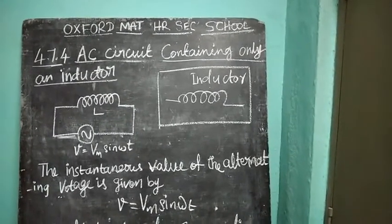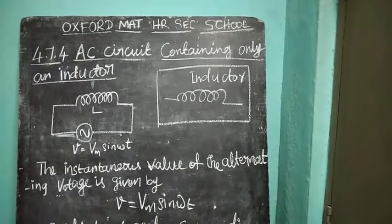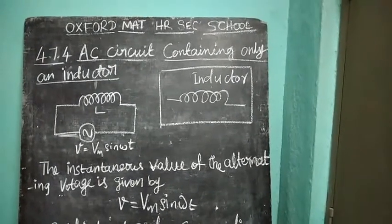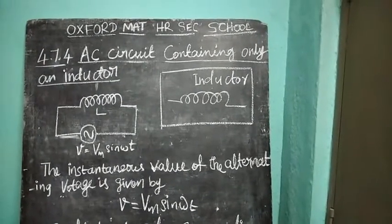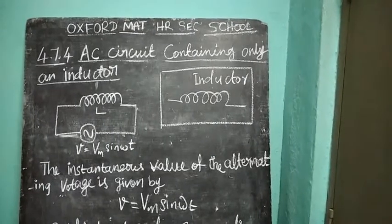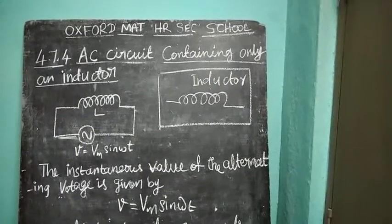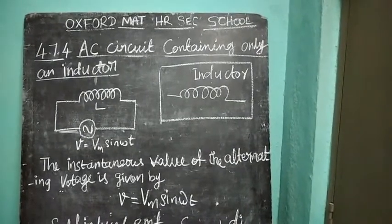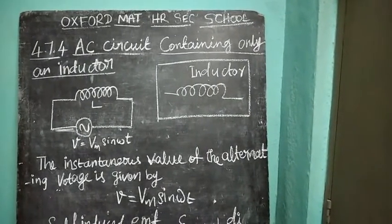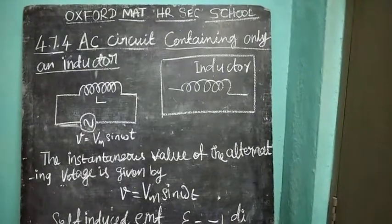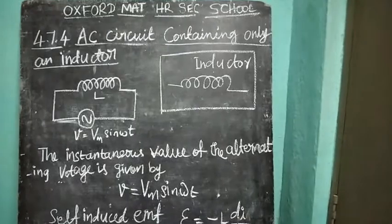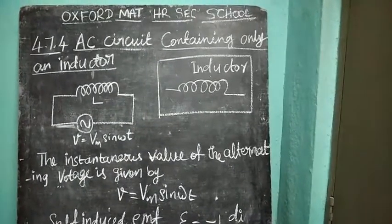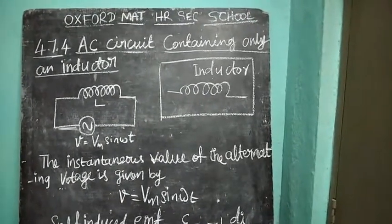An inductor of inductance L is connected in series to the alternating source of voltage. The instantaneous value of the alternating voltage is given by V equal to Vm sin omega t.